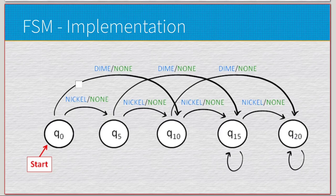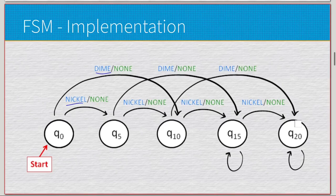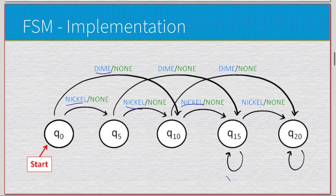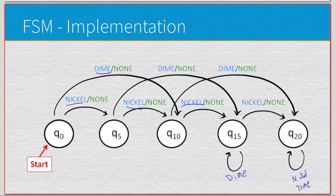Adding more complexity, we now have two coin types: nickels and dimes. There's still no actual transaction happening — it just shifts to new states. For example, nickel, nickel, dime goes q0 to q5 to q10, then the dime loops us to q20. Three nickels and one dime: nickel goes q5, q10, q15, and since there's no valid dime transition from q15, it loops back on itself. We can only count up exactly to q20 — you can't overload the system.